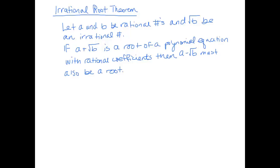The first one is called the Irrational Root Theorem. So it says, if a and b are rational numbers, and the square root of b is an irrational number, or in other words, b is not a perfect square.